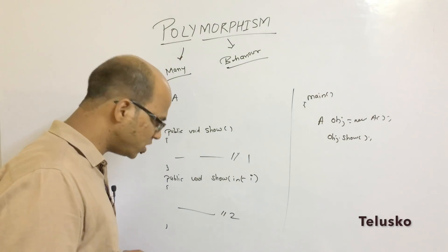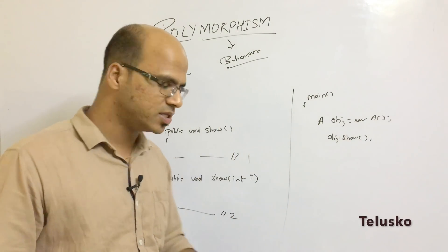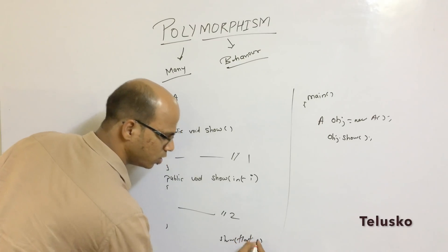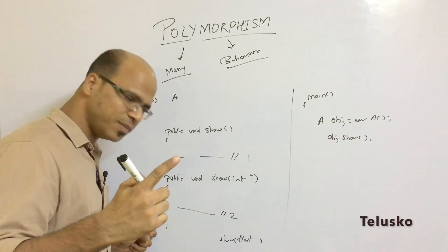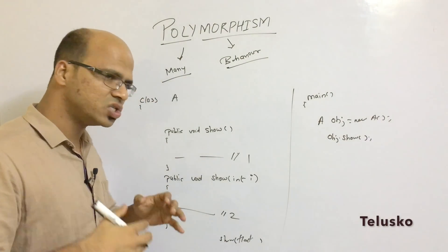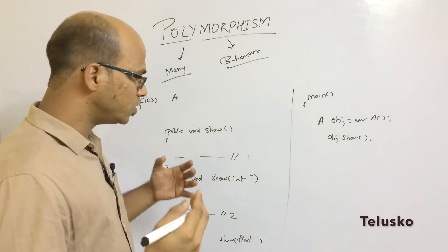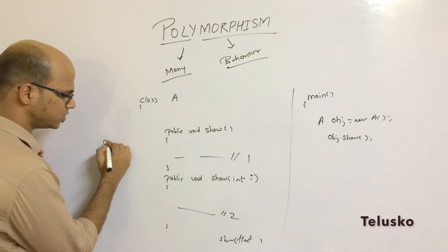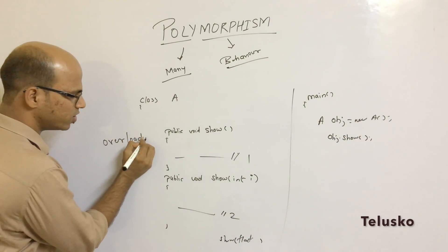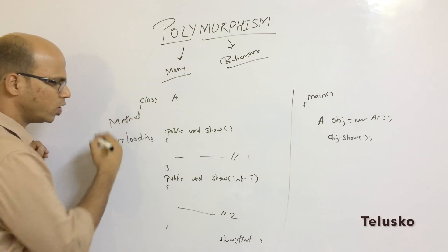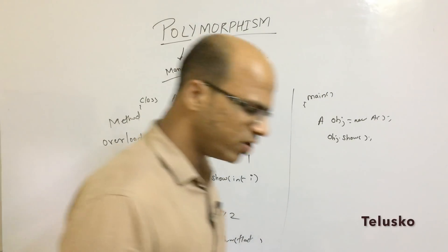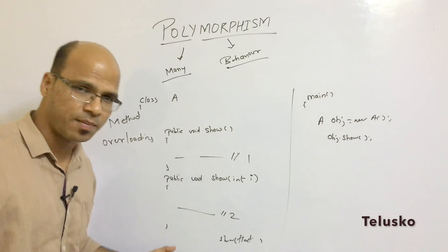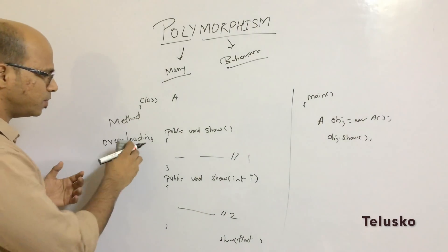You can have multiple methods. You can have one more show which takes a float parameter. Now the count is the same — it takes only one parameter — but they are different types. So it's not just the number of parameters, it's also the type of parameters. If you have multiple methods with the same name but different parameters, this will be called overloading of methods — method overloading. The same method name but different parameters, different types of parameters, different number of parameters — that's method overloading.